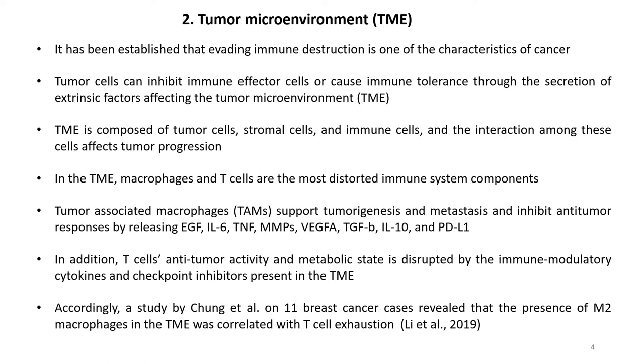In the tumor microenvironment, macrophages and T cells are the most distorted immune system components. Tumor-associated macrophages support tumorigenesis and metastasis and inhibit anti-tumor responses by releasing EGF, IL-6, TNF, MMPs, VEGFA and so on. T cell anti-tumor activity and metabolic state is disrupted by immunomodulatory cytokines and checkpoint inhibitors present in the tumor microenvironment. A study by Chung et al. on 11 breast cancer cases revealed that the presence of M2 macrophages in the TME was correlated with T cell exhaustion.